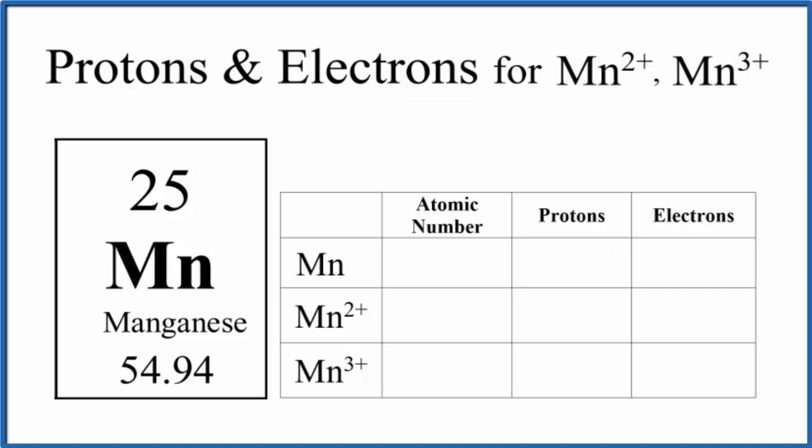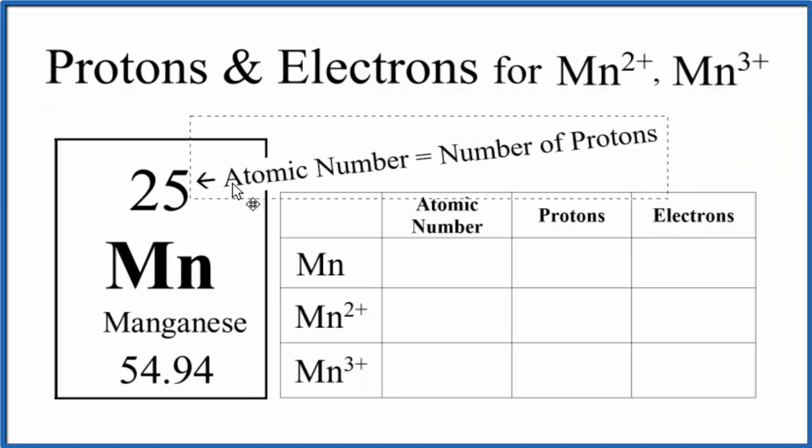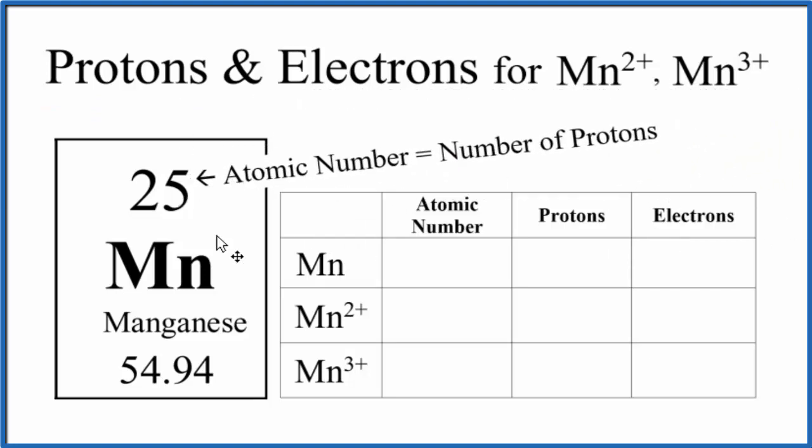When we look at the periodic table, we can see the atomic number right here is 25 for Mn. So, atomic number 25.